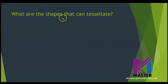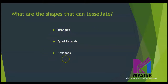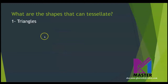Now, what are the shapes that can tessellate? We have many shapes. Some of them always tessellate, such as triangles, quadrilaterals, and hexagons. So all types of triangles, all types of quadrilaterals, and all types of hexagons can tessellate. Let's check this by examples.